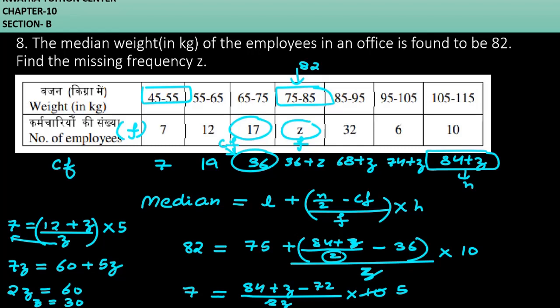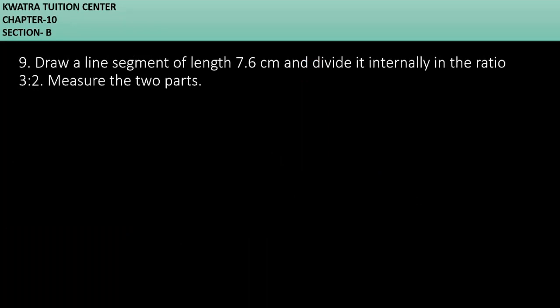Now moving to the next one, the ninth question. It says draw a line segment of length 7.6 cm and divide it internally in the ratio 3:2. Measure the two parts. First of all, you have to draw a line segment of 7.6 cm, then mark it as A and B.